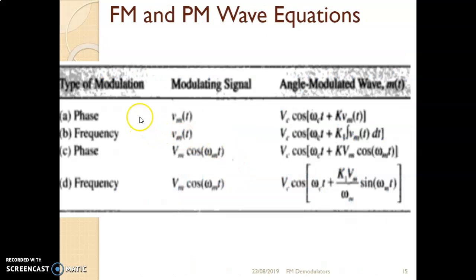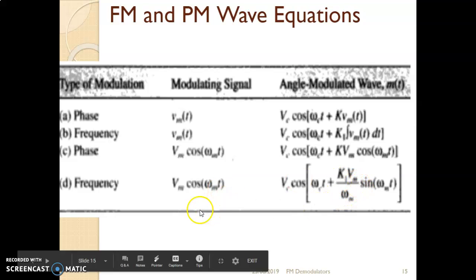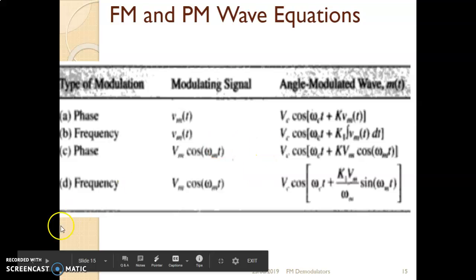These are the equations for FM and PM. For phase modulation, the modulating signal is represented by Vm(t), and the output expression is Vc·cos(ωc·t + Kp·Vm(t)). For frequency modulation, it involves the integration of Vm. For PM, if Vm is a cosine equation, then the output follows accordingly. For FM, if Vm is a cosine equation, the output will involve the integration of cos(ωm·t), which is sin(ωm·t) divided by ωm. These are the equations for FM and PM.